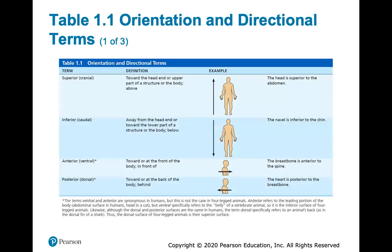Here are common orientation and directional terms. Superior is the word associated with anything cranial, or toward the head or upper part of the body. An example: the head is superior to the abdomen. Inferior, also called caudal, means away from the head or toward the lower part of the body. The navel — your belly button — is inferior to the chin.